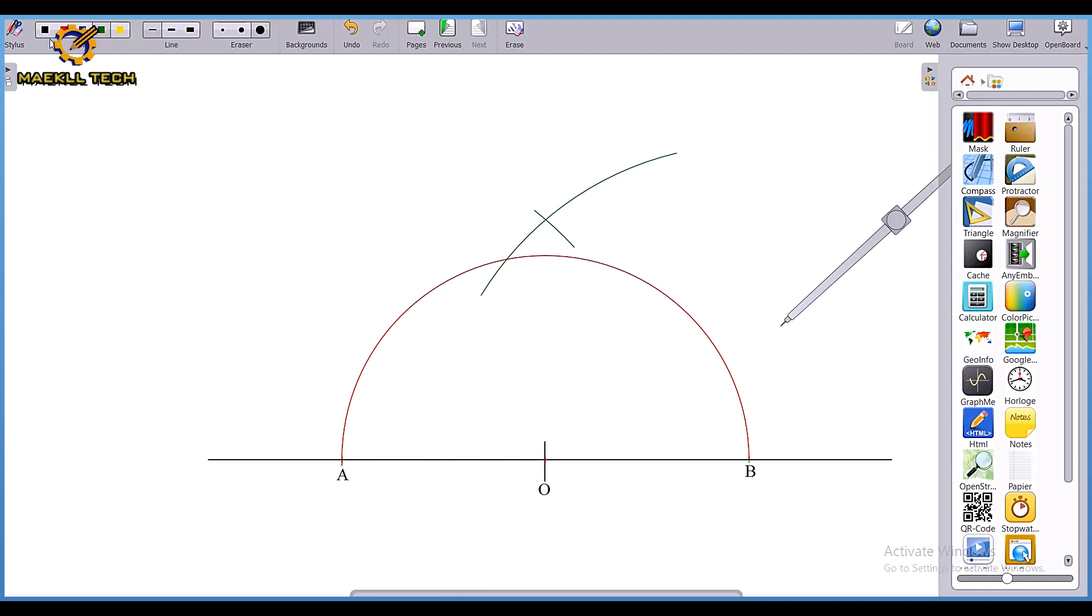Pick my ruler and join from this end of my arc towards the center of my intersection. As it is now, the distance from this area here to this area here is 90 degrees. The total angle from this junction all the way down here is 90 degrees.